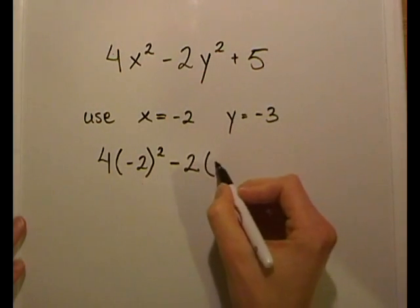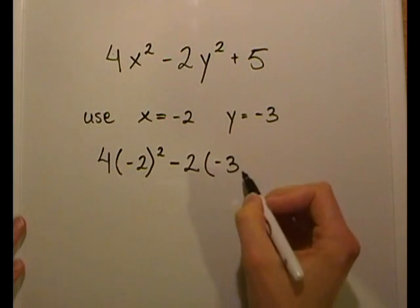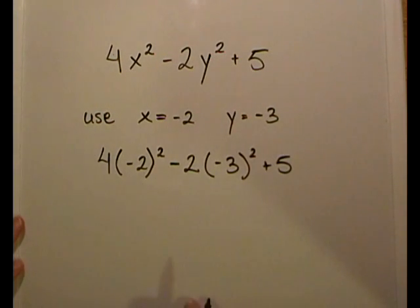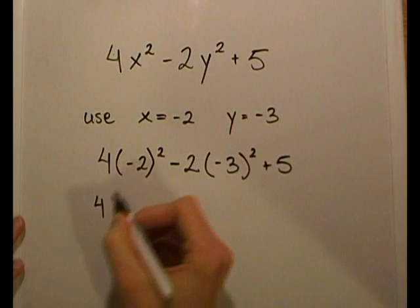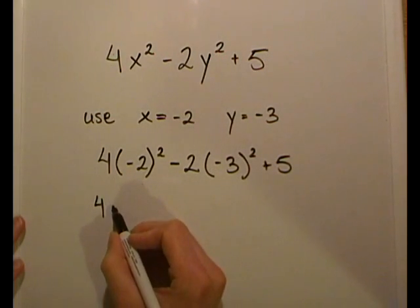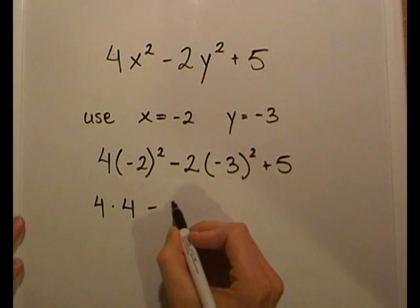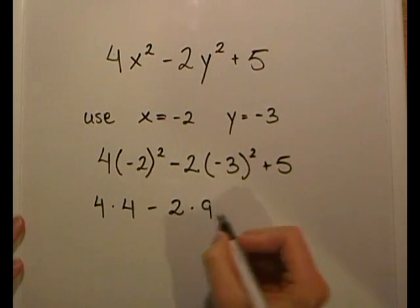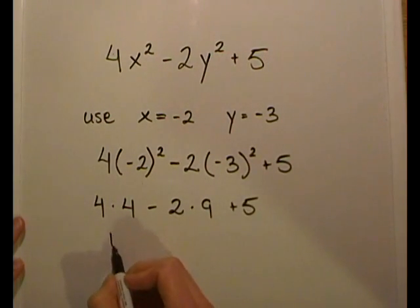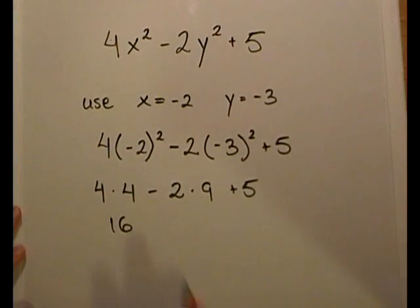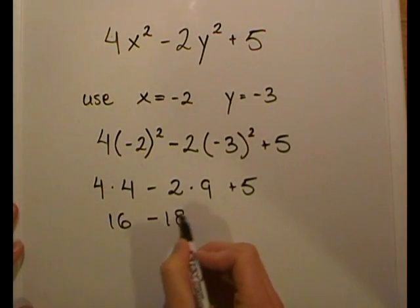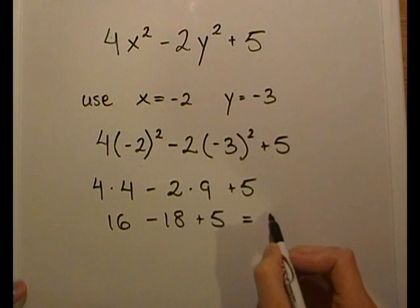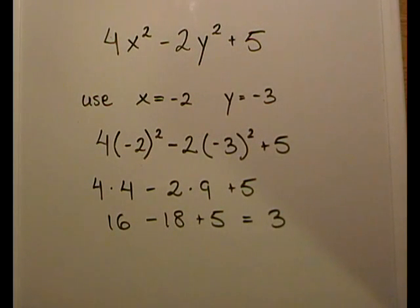So the correct way is: 4 times negative 2 in parentheses squared, minus 2 times y — replace y with negative 3 in parentheses — squared, plus 5. Now we solve: negative 2 squared in parentheses is positive 4, so 4 times 4 is 16; negative 3 squared in parentheses is positive 9, so minus 2 times 9 is negative 18; plus 5. That gives us 16 minus 18 plus 5, which equals positive 3.